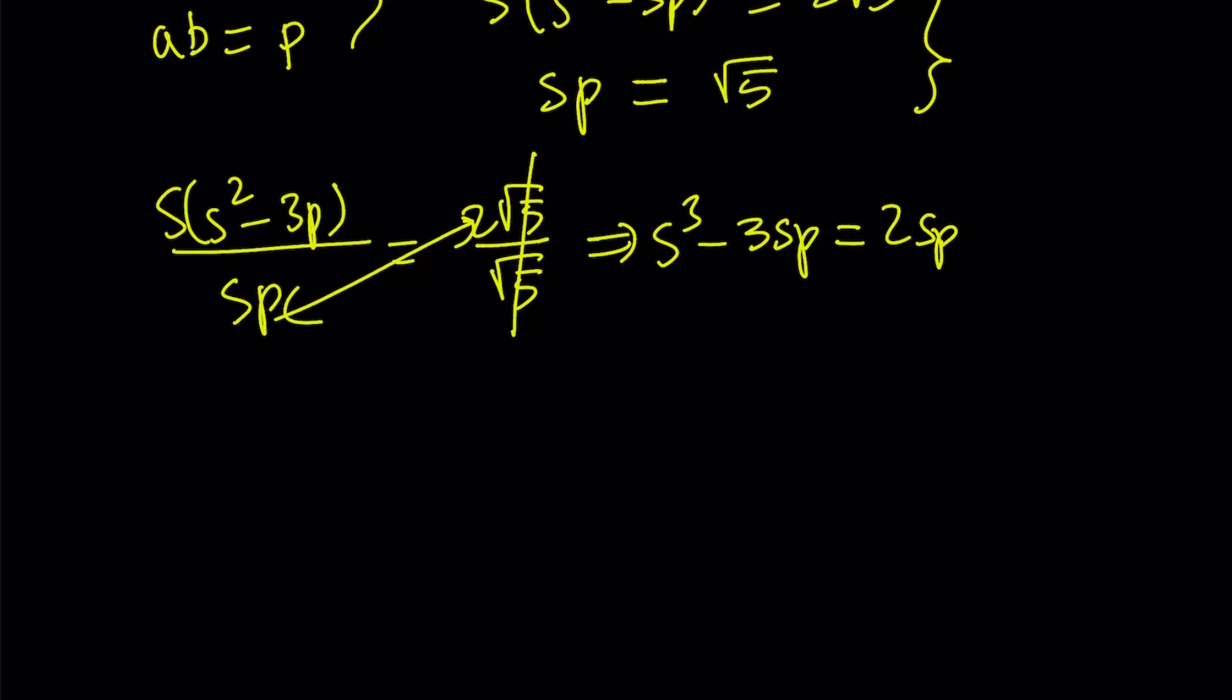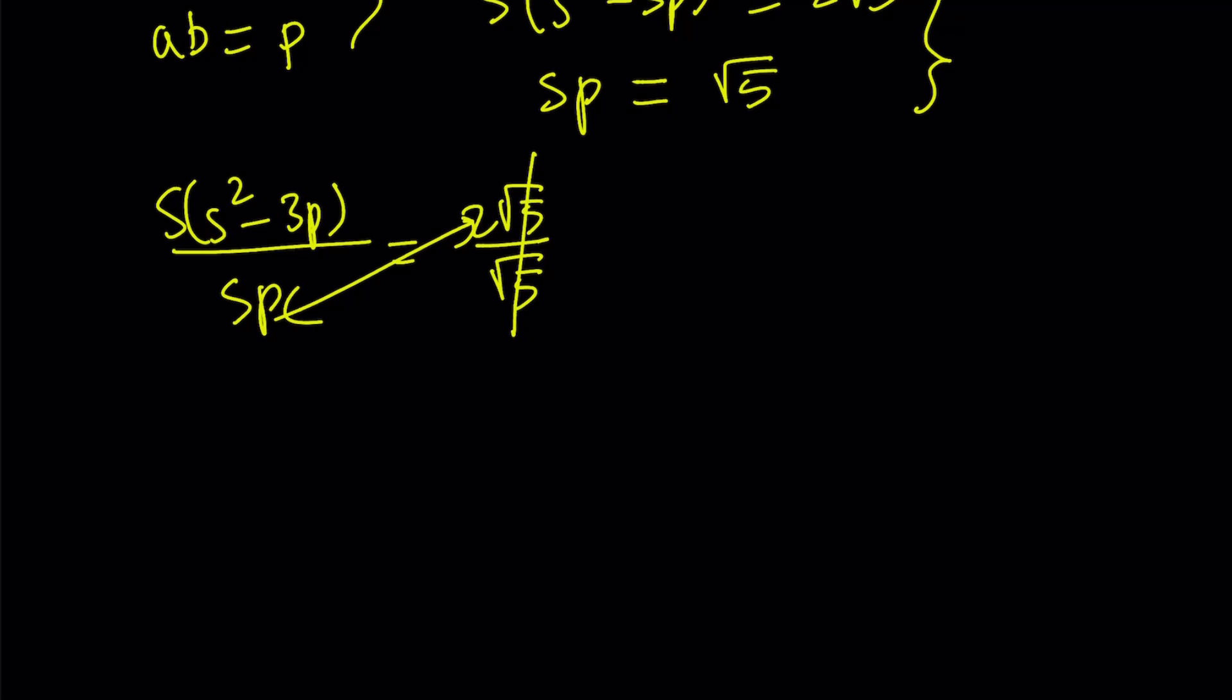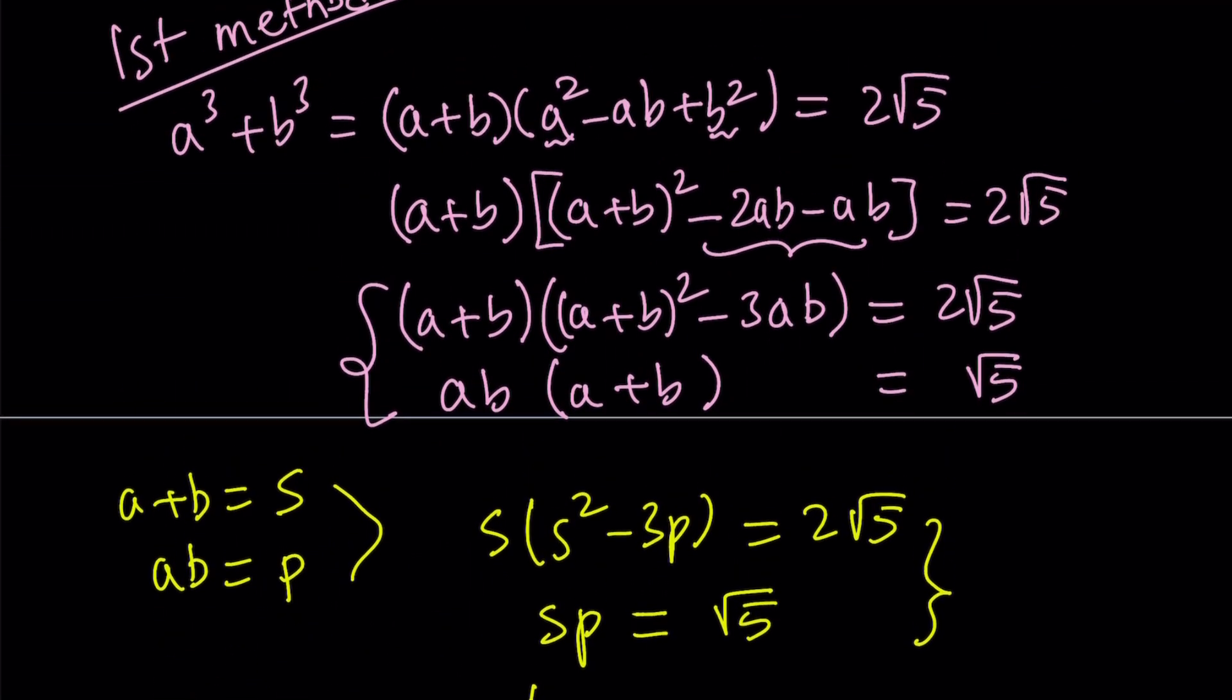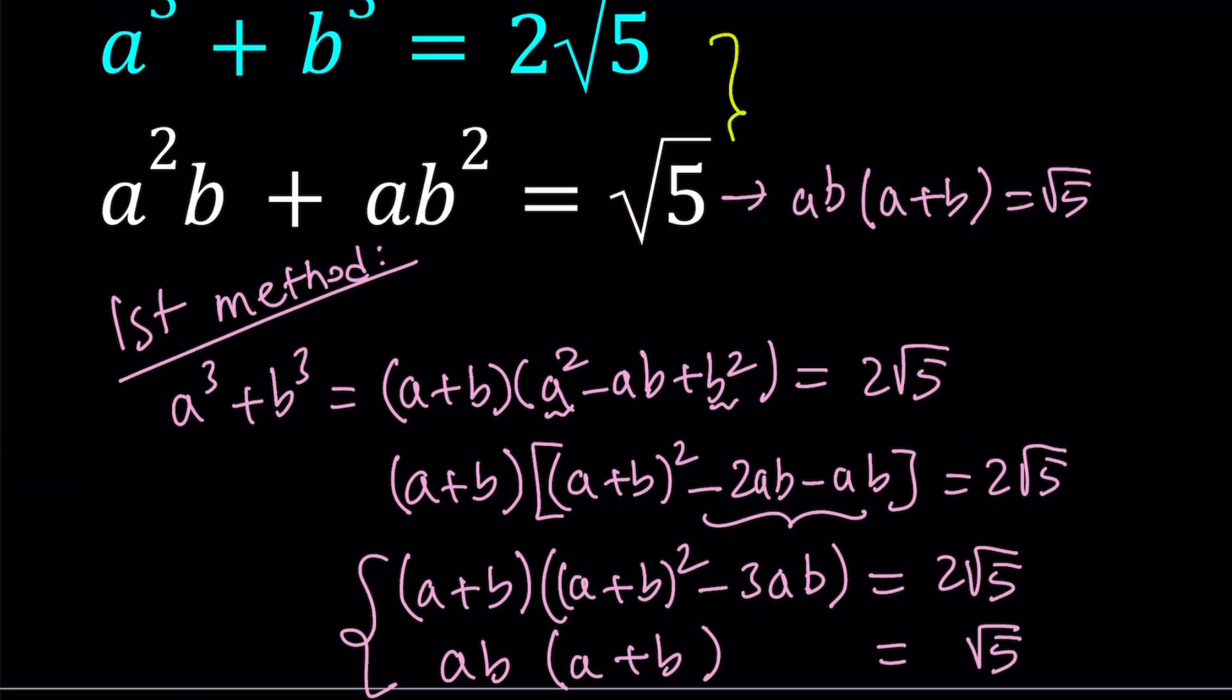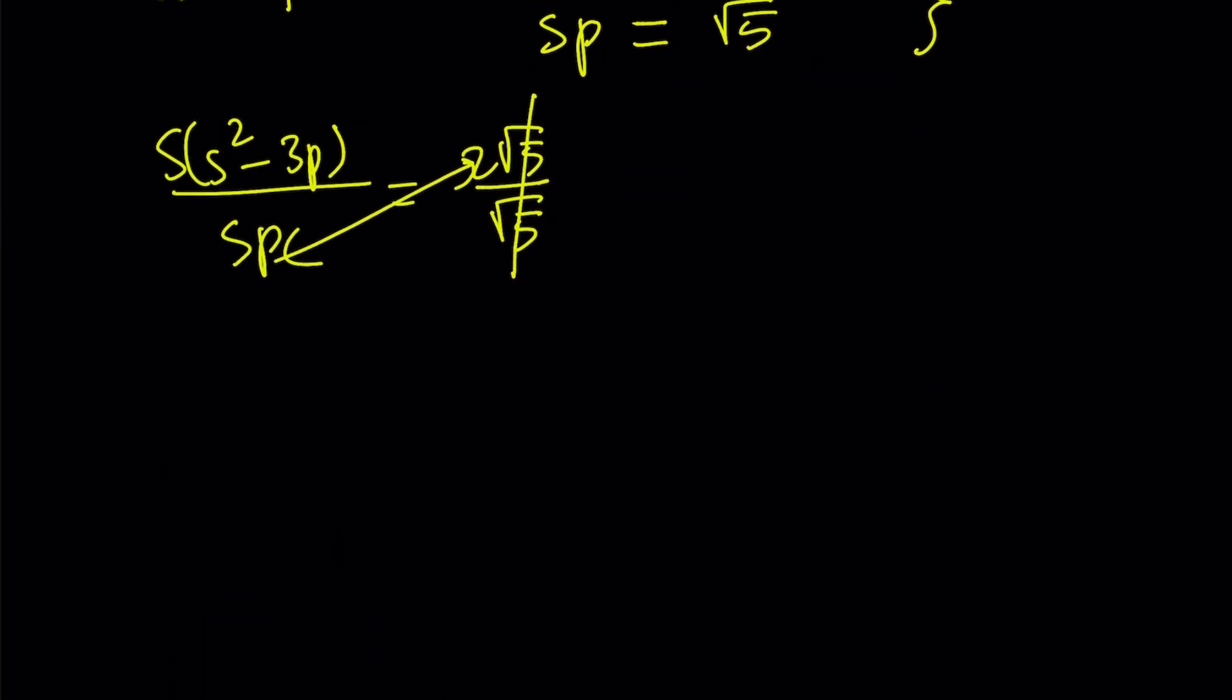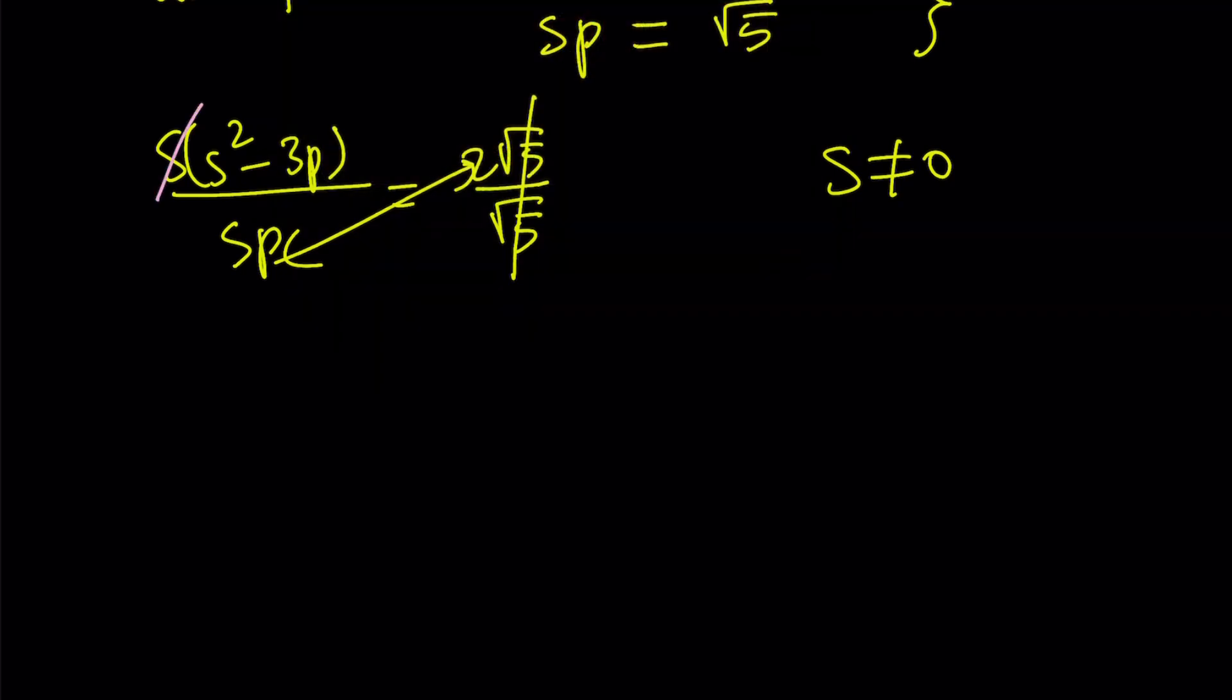Here we get 2sp. Oh, by the way, we forgot to do one thing. We forgot to cancel out the s. So can s be 0? Well, s is a+b. If a+b is 0, then both of these quantities are going to be 0. So a+b cannot be 0. So s does not equal 0. So why not cancel out the s?